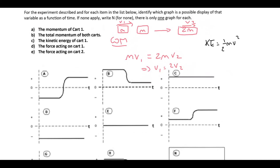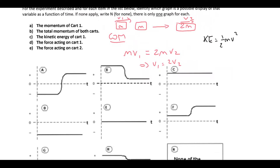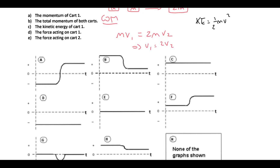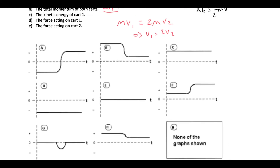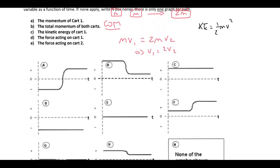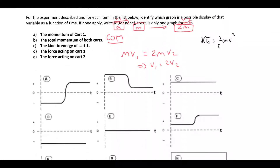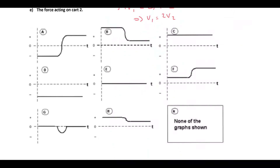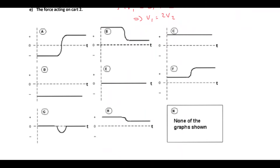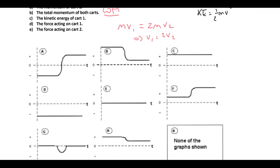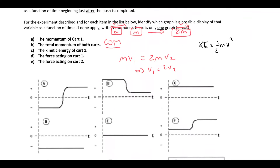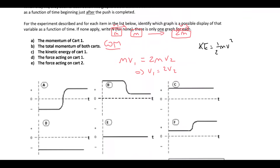The momentum of cart 1 — its velocity halves, therefore its momentum halves. So we're looking for a graph that shows a property being halved, and it should be positive because it's essentially in the positive direction. So what we're looking for is graph H, because that's the graph that shows something being halved.